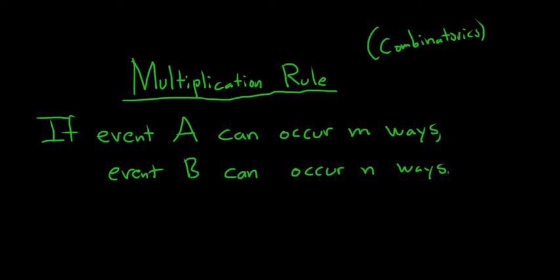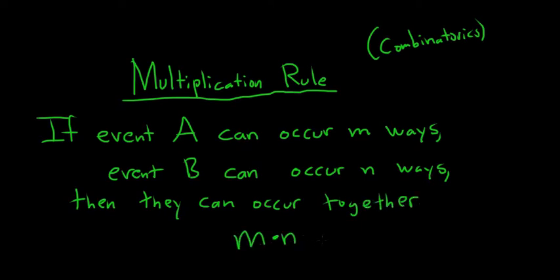We have two events. There's M ways for event A to occur, and N ways for event B to occur. Then together, or in sequence, they can occur together M times N ways. So you multiply. Hence the name multiplication rule.